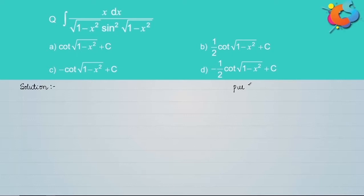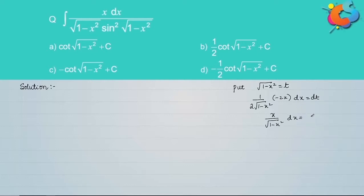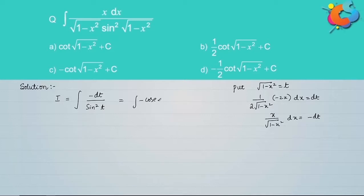Putting root of (1 minus x squared) as t and differentiating gives 1 over 2 root of (1 minus x squared) times minus 2x dx equals dt, so x over root of (1 minus x squared) dx becomes minus dt. The integral becomes minus 1 over sine squared t, which is minus cosecant squared t dt. Integration of minus cosecant squared t is cot t, where t is root of (1 minus x squared), giving cot of root of (1 minus x squared) plus C. Hence the first option is correct.